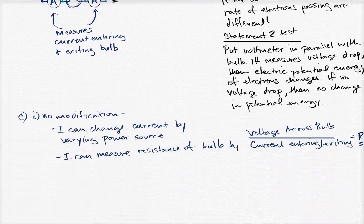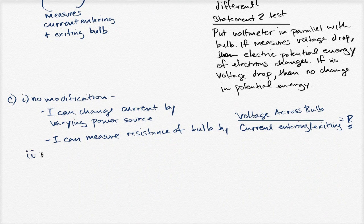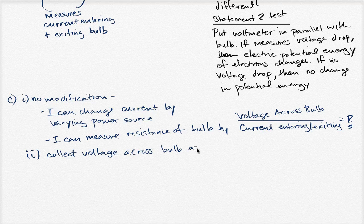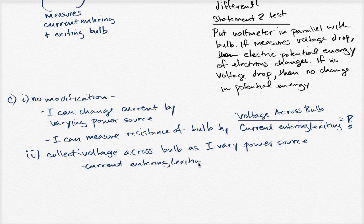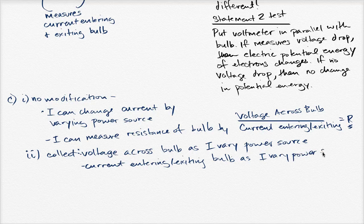What additional data, if any, would need to be collected? I need to collect voltage across the bulb as the current changes — as I vary the power source. I would also collect the current entering and exiting the bulb as I vary the power source. With these measurements, I'll be able to figure out if R changes.